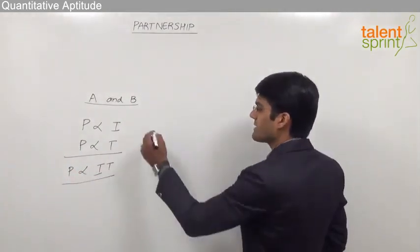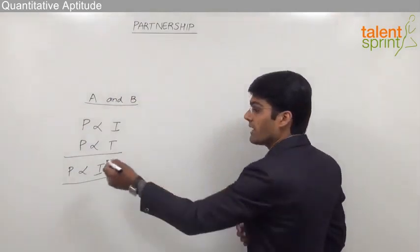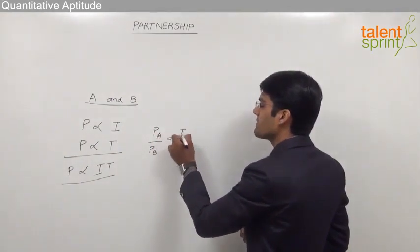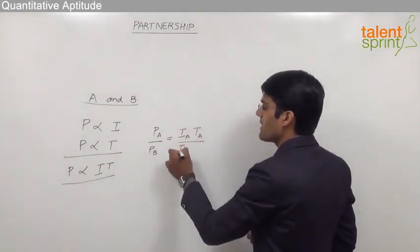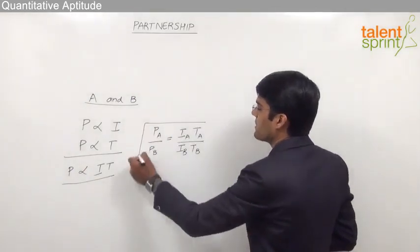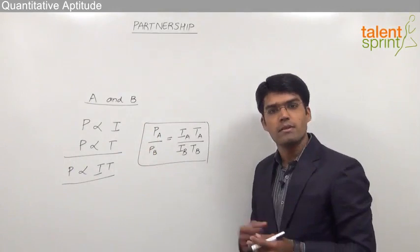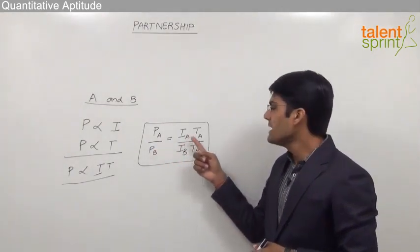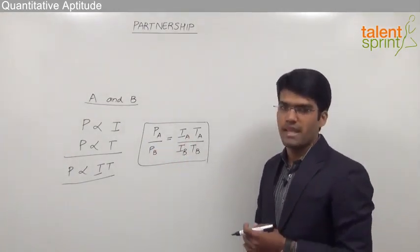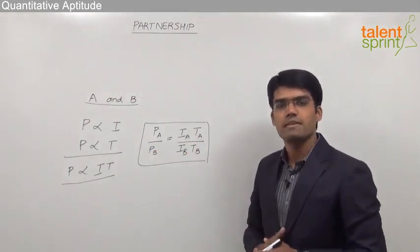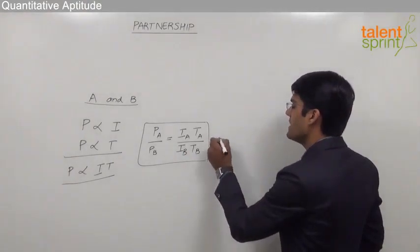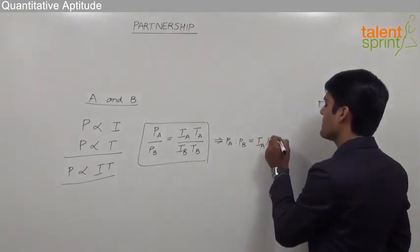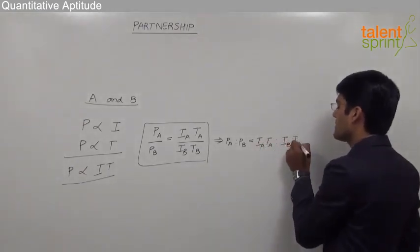From this proportionality we can understand that if there are two persons A and B, the ratio of their profits should be: Profit of A to Profit of B equals Investment of A × Time of A's investment divided by Investment of B × Time of B's investment. So PA : PB = IA×TA : IB×TB. Here PA and PB are the profits of persons A and B, and IA, TA, IB, TB are their respective investments and times of investment.